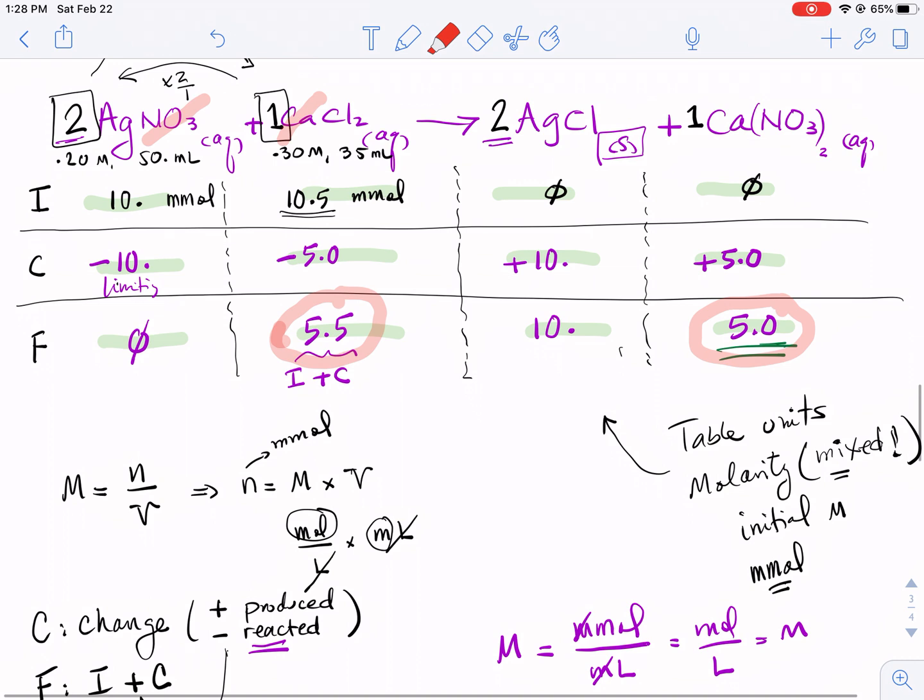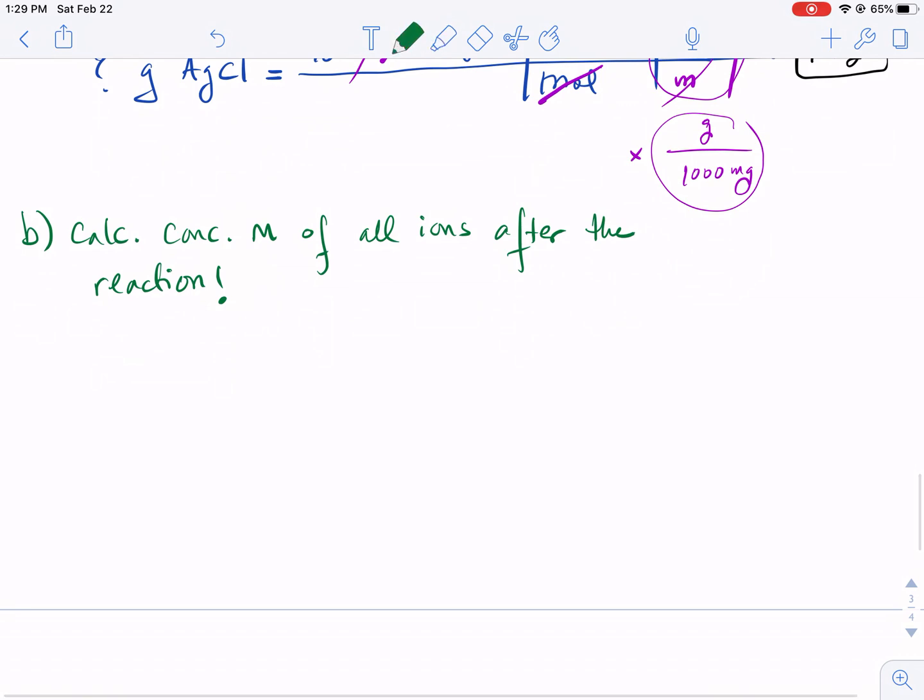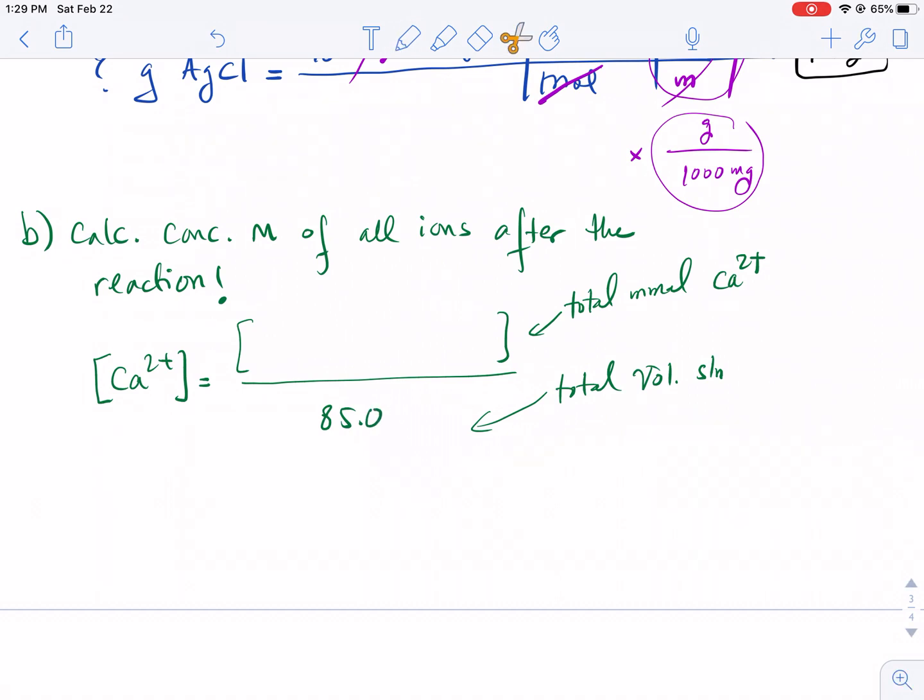Let's start with calcium ion. Remember, calcium ion shows up in calcium chloride and calcium ion shows up in calcium nitrate, so there are two parts that you have to add up together. To find molarity of calcium ion, you have to add up the two millimoles, so the numerator is essentially total millimoles of calcium ion. The denominator is total volume of solution, which is 85 milliliters.